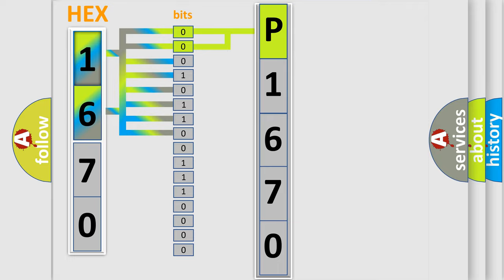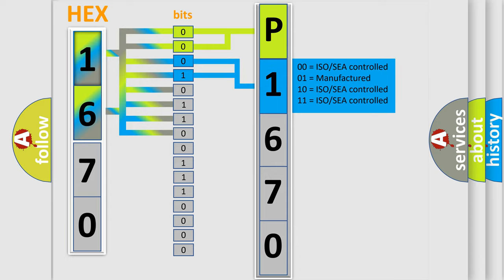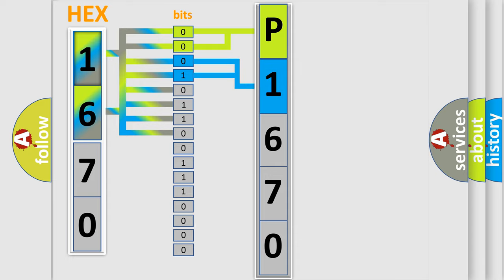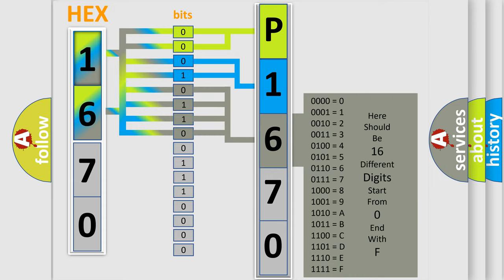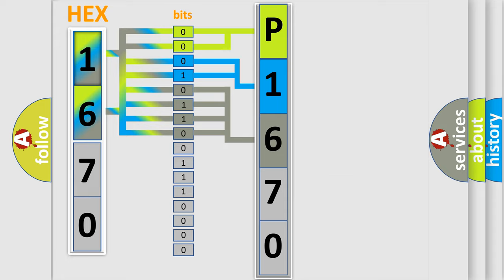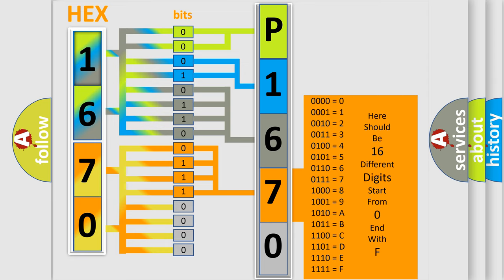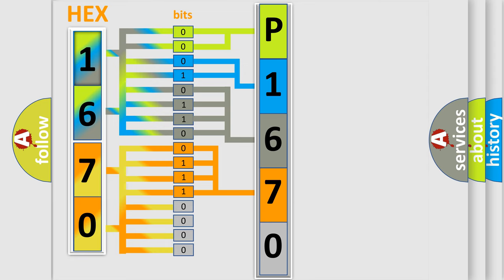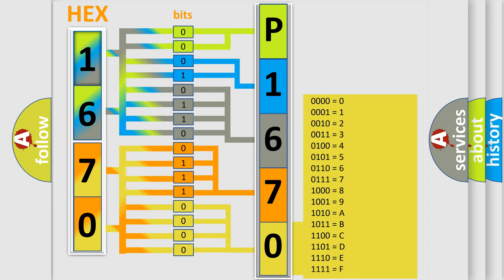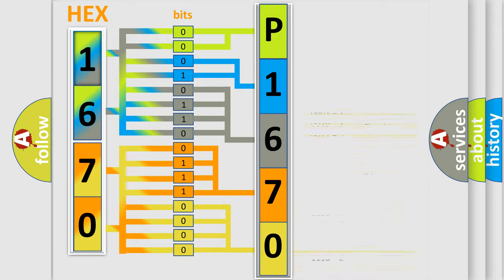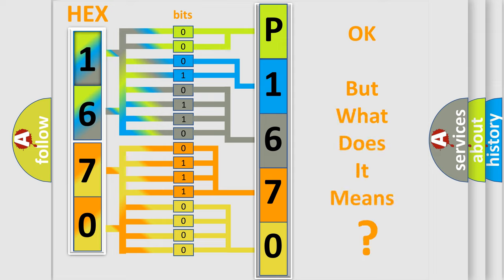The next two bits determine the second character. The last bits of the first byte define the third character of the code. The second byte is composed of a combination of eight bits. The first four bits determine the fourth character of the code, and the combination of the last four bits defines the fifth character. A single byte conceals 256 possible combinations. We now know in what way the diagnostic tool translates the received information into a more comprehensible format.